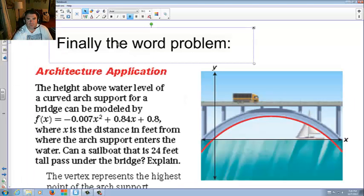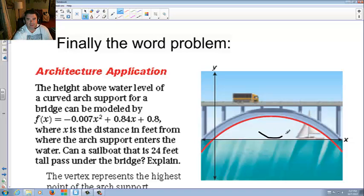Last page. Finally the word problem. Architecture application. The height above water level of a curved arch support for a bridge can be modeled by f of x, which remember means y, equals negative 0.007x squared plus 0.84x plus 0.8, where x is the distance in feet from where the arch support enters the water. Can a sailboat that is 24 feet tall pass under the bridge? In other words, from here. And now I know you may not be able to draw an epic sailboat like me. Yeah, that's the stuff. Oh yeah. Yeah, would it be this tall? Or would it be too tall? Would it crack into the bottom of the bridge? To find that out, we actually have the model right here. So that's what we're going to start with.